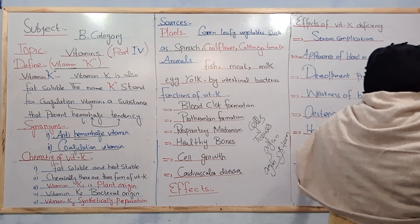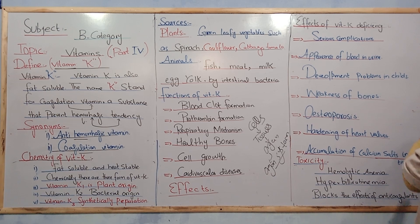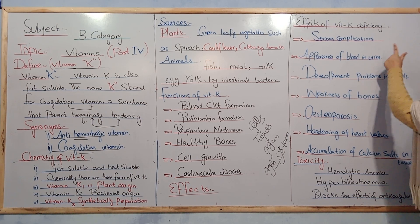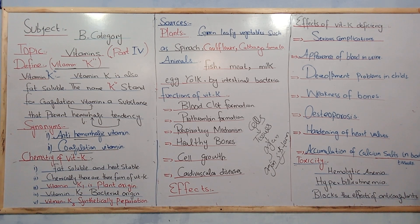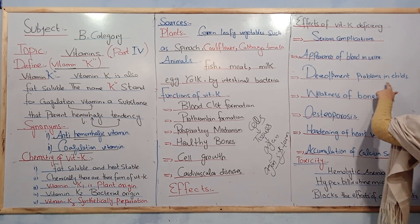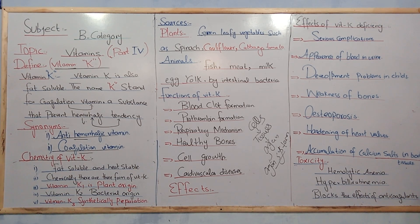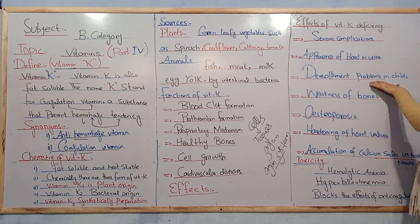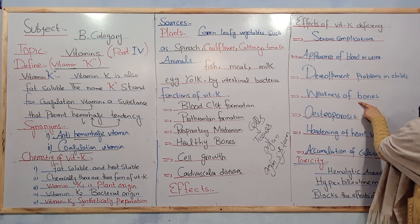There are some main effects of vitamin K deficiency. Deficiency of vitamin K results in serious complications, including prolonged bleeding and excess blood loss. There can also be development problems in children and newborns. Weakness of bones also occurs, as the hardness of bones diminishes.